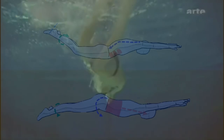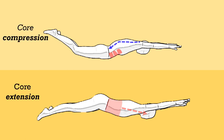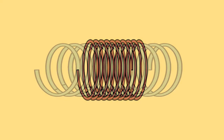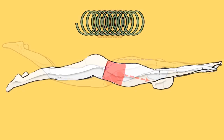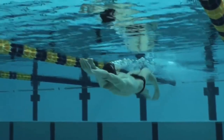Furthermore, the dolphin kick is highly dependent on several movement formulas, the center of which is that of an alternating spring-like mechanism performed by the core muscles: compression, extension, compression, extension, compression, extension.